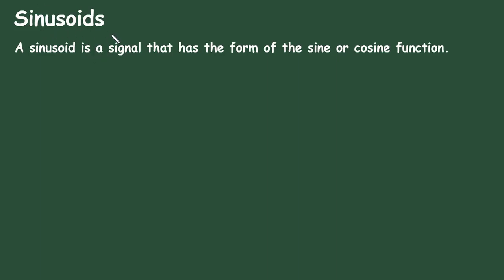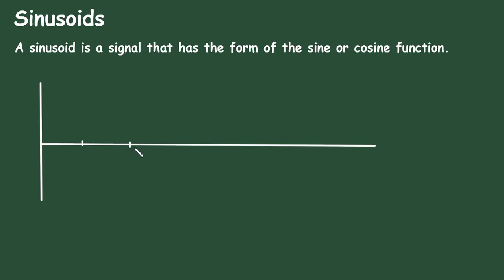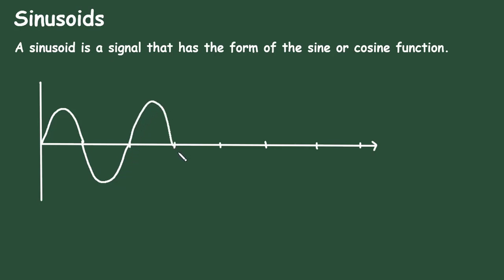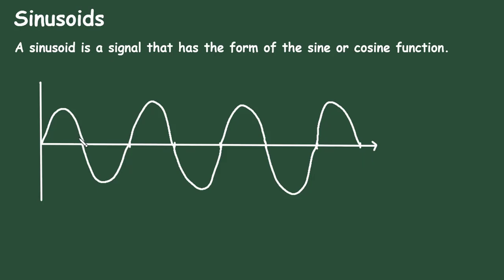In this video we will see sinusoids. A sinusoid is a signal that has the form of the sine or cosine function. Let us see the sine and cosine functions. This is a sine function, and the sine waveform will look something like this. This is a sine function and let us say this is a sinusoidal voltage waveform.